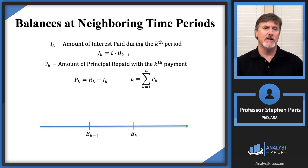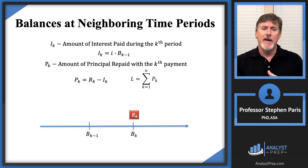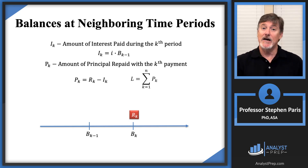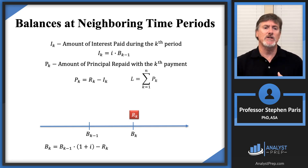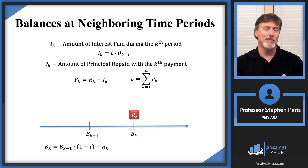Now let's turn our attention to balances at neighboring time periods. What accounts for the difference in those values is that you're making a payment at time K. Cap R sub K is the payment at time K. Just before the payment at time K, the balance would be the balance at time K minus one accumulated for one period. So the balance just before that payment is cap B sub K minus one times (1+i), and then we subtract the actual payment amount to get cap B sub K.